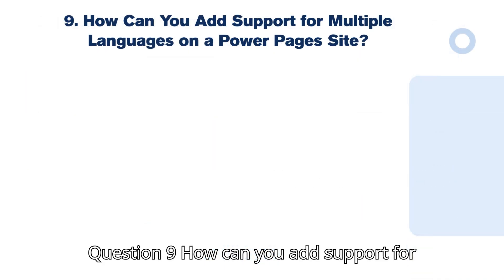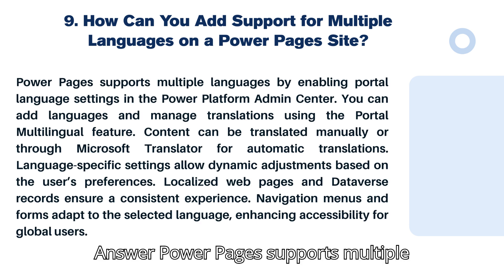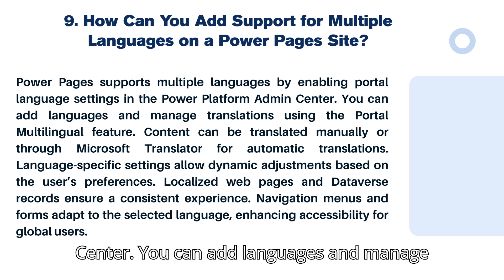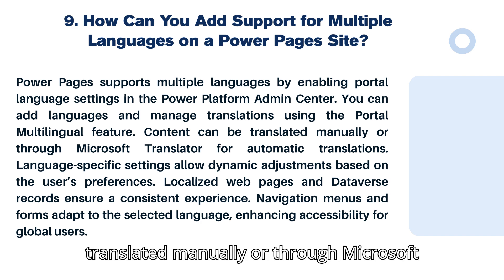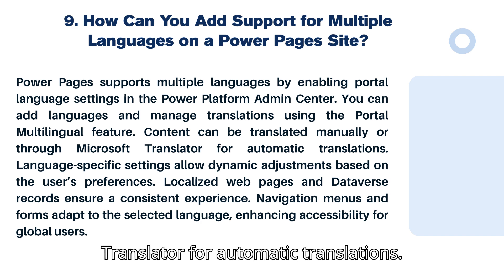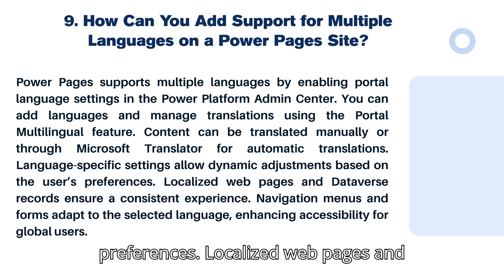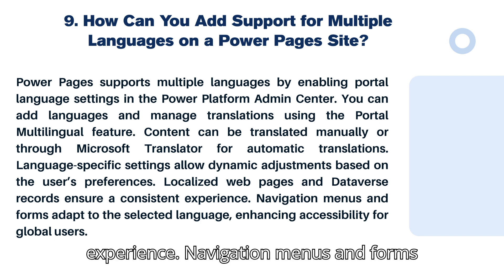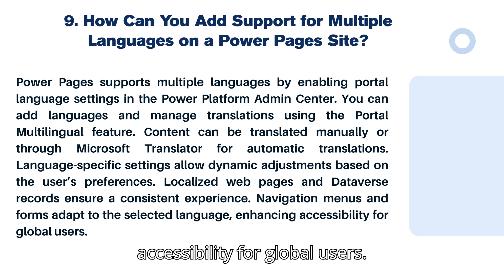Question 9: How can you add support for multiple languages on a Power Pages site? Power Pages supports multiple languages by enabling portal language settings in the Power Platform Admin Center. You can add languages and manage translations using the portal multilingual feature. Content can be translated manually or through Microsoft Translator for automatic translations. Language-specific settings allow dynamic adjustments based on user preferences, and navigation menus and forms adapt to the selected language, enhancing accessibility for global users.